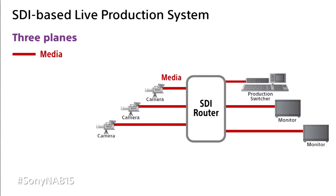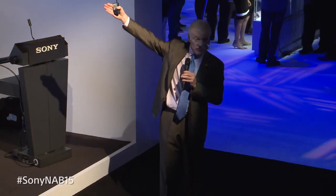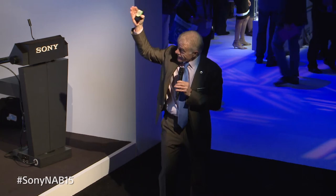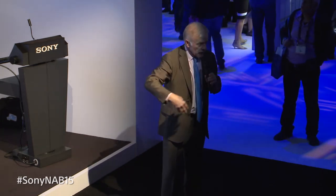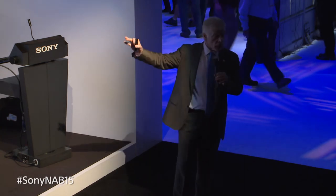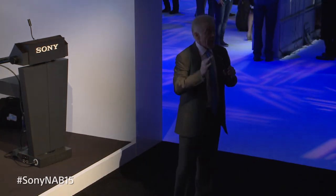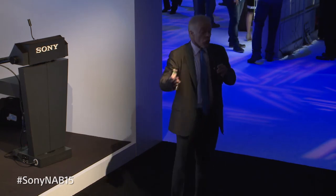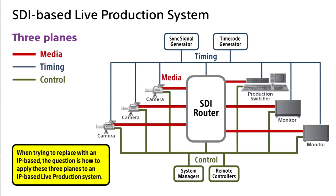The key element of a broadcast plant is the SDI router. In SDI we have three planes: media planes — coaxial cable from camera to router; timing planes — timing information from the signal generator distributed to all elements; and controllers for switching. If we could reproduce these functions with IP, we have a good shot at creating an IP-based plant.